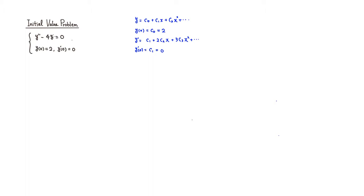Now let's work on the differential equation using the power series method. y double prime is the summation from n equals 2 to infinity of n times (n minus 1) times cn times x to the (n minus 2), minus 4 times the summation from n equals 0 to infinity of cn times x to the n, equals 0.